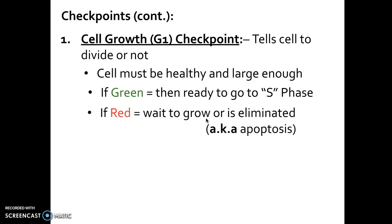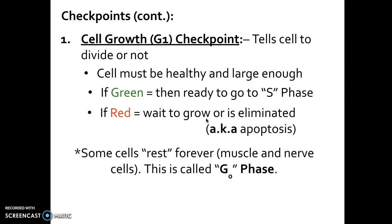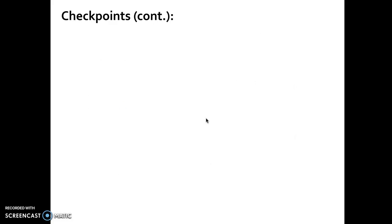If the cell is ready at G1, it gets a green light to move on to the S phase. If not, the cell is given time to grow bigger, and if it still doesn't reach the threshold, it goes through apoptosis. Some cells don't even reach this point because they enter the G0 phase, where they rest for the rest of their life — as mentioned at the beginning, muscle cells and nerve cells do this.